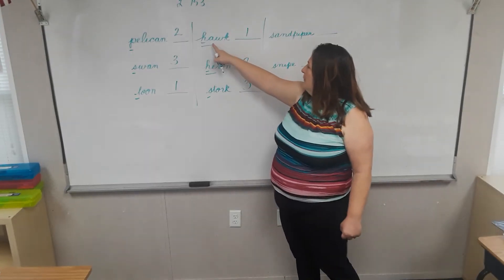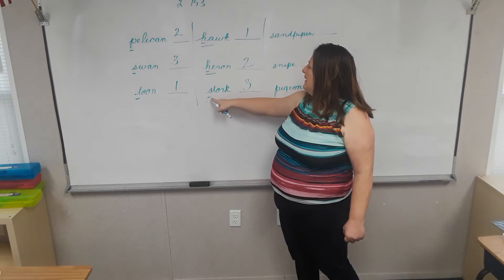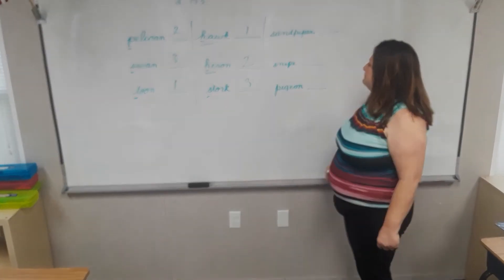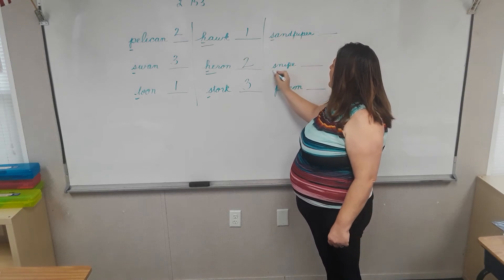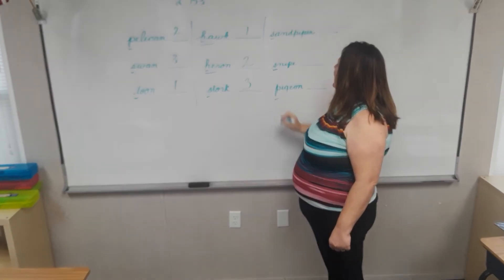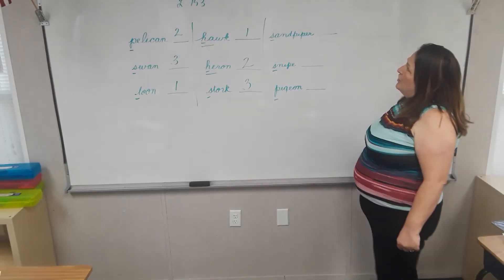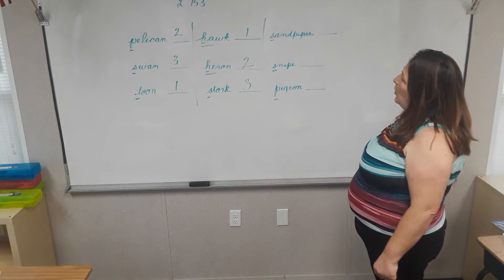So we have H, A is first. H, E is second. S is third. Here we have an S, an S, and a P. Which comes first? S or P?